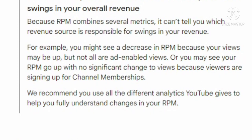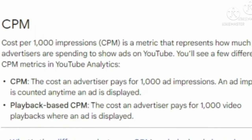For example, you might see a decrease in RPM because your views may be up but not all are monetized views, or you may see RPM go up with no significant changes to views because viewers are signing up for channel membership. We recommend you use all the different analytics YouTube provides to help you fully understand changes in your RPM. CPM — cost per 1000 impressions — is a metric that represents how much money advertisers are spending to show ads on YouTube.